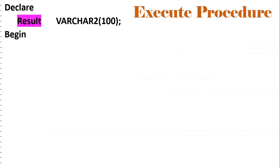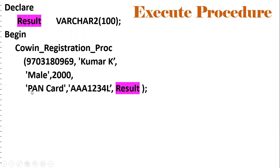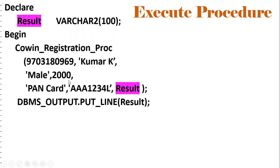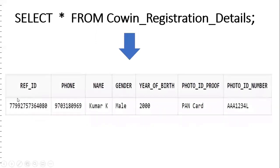Now we execute the procedure using an anonymous block. The procedure name is covin_registration_proc. We pass the input parameters: phone number, name, gender, year of birth, 'PAN Card' as the photo ID proof, and the PAN card number. The result variable holds the output. Once we execute the anonymous block, the output will be 'Account added successfully. Your reference ID is as follows.' We can then SELECT from covin_registration_details and confirm the data is stored: reference_id, phone number, name, gender, year of birth, photo ID proof, and photo ID number.